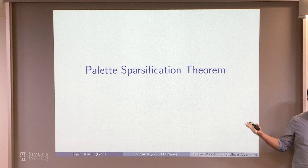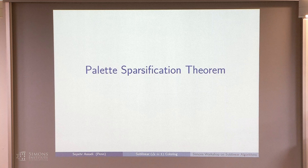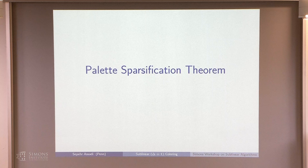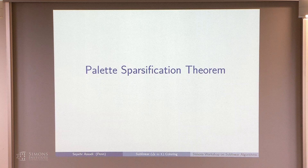Question: I'm trying to get intuition — if I had a star, how do you know the difference between delta versus delta plus one when sampling only log n colors? — You know they are sampling from delta plus one colors. A star is also colorable with delta, with just two colors. A clique is a better example, and I'll show you why.